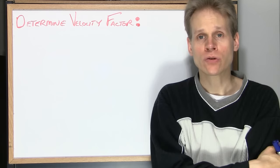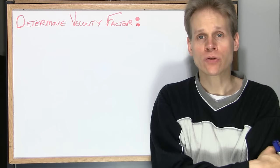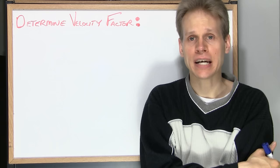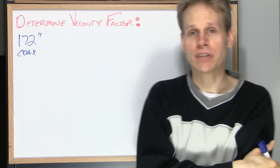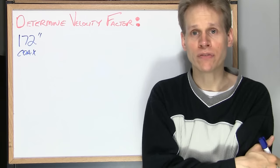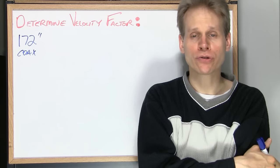This is how we determine the velocity factor of an unknown piece of coax. So this unknown piece of coax that we have is 172 inches long because we have verified that by measuring it with a measuring tape. We've also taken this 172 inch piece of coax and attached it to the time domain reflectometer that we've just built. And we've used an oscilloscope to verify that the round trip time is 36.5 nanoseconds.